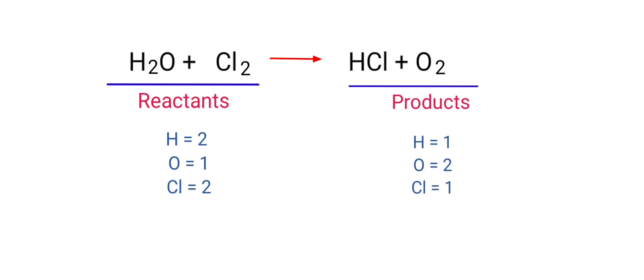If you look at this equation, it is not balanced. On the reactants side there are two hydrogen atoms, one oxygen atom, and two chlorine atoms. On the products side there are one hydrogen atom, two oxygen atoms, and one chlorine atom. The number of atoms are not balanced on both sides.